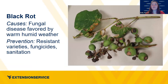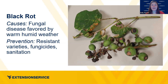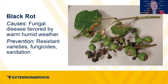Black rot is a fungal disease in grapes — again that warm, wet weather. You can see the berries turn mummified — they're black and look really unpleasant. Preventative measures for black rot are strongly advised, along with sanitation. You'd want to prune out infected sections so it's not spreading to other parts of the plants.